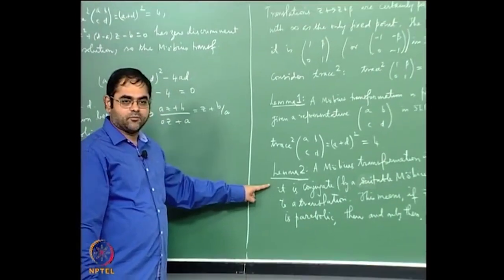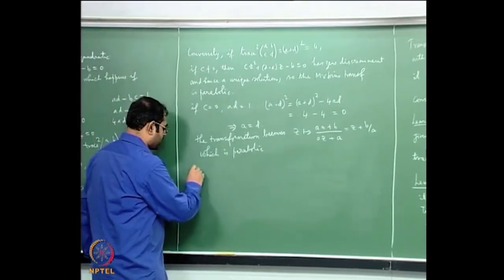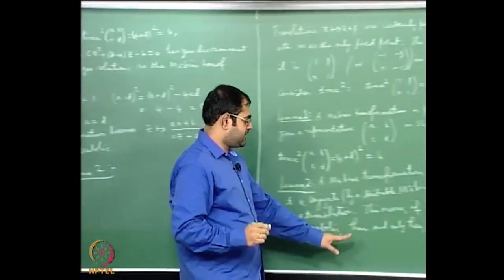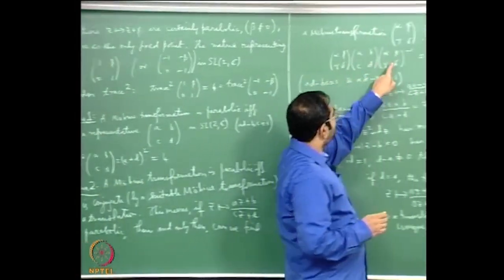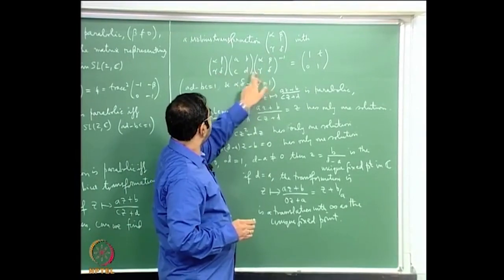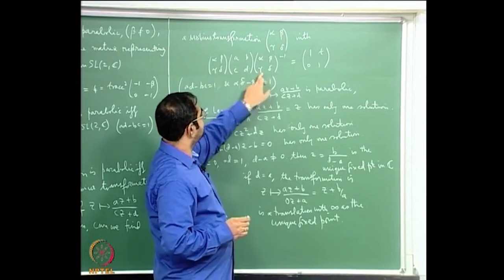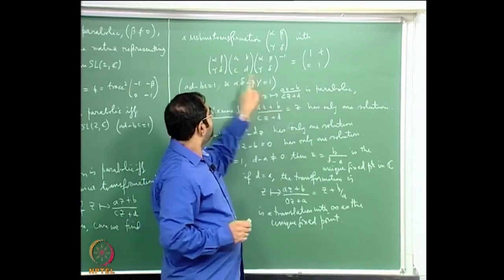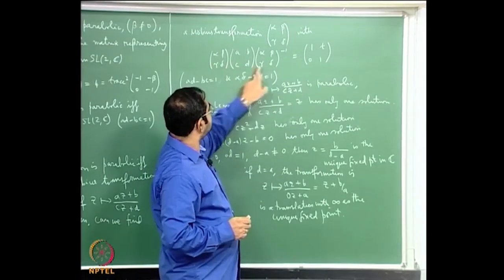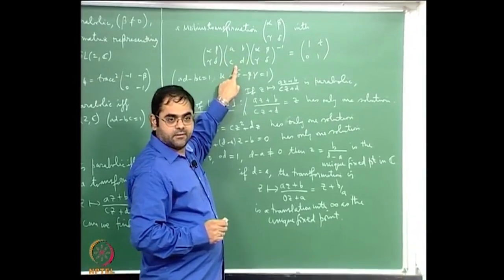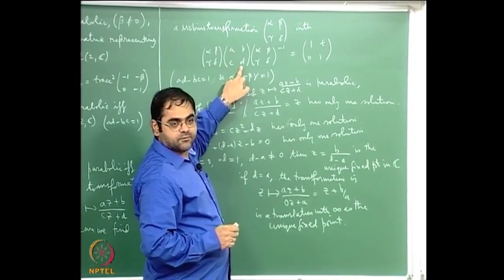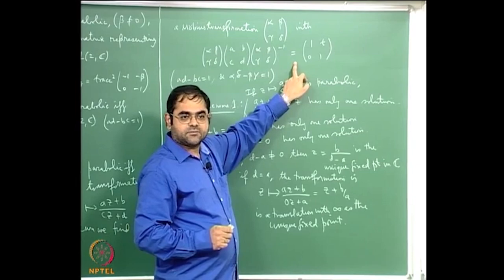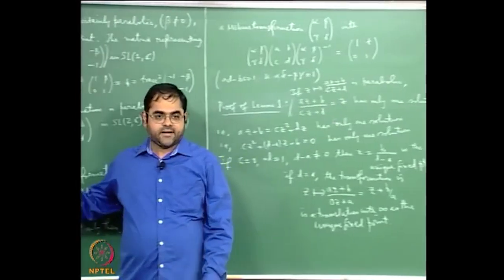Proof of Lemma 2: the easy case is if you can find a Möbius transformation such that conjugating [a b; c d] by it gives a translation [1 t; 0 1]. Taking trace on both sides — trace is invariant under conjugation — the left side gives trace squared (a+d)², the right side gives trace squared of [1 t; 0 1] which is 4. So if the conjugation equation holds, trace squared equals 4, and by Lemma 1 the Möbius transformation is parabolic.